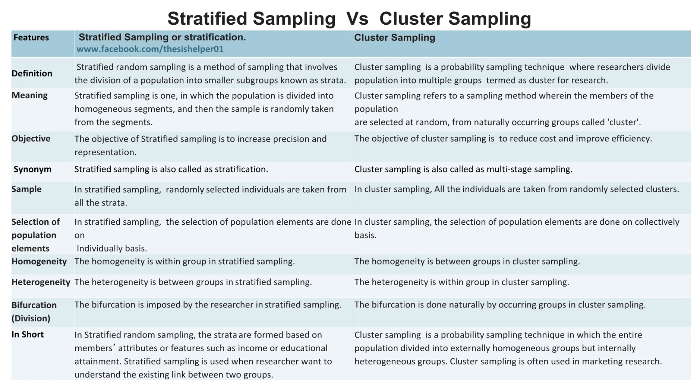Stratified sampling is one in which the population is divided into homogeneous segments and then the sample is randomly taken from the segments. Whereas, cluster sampling refers to a sampling method wherein the members of the population are selected at random from naturally occurring groups called clusters.